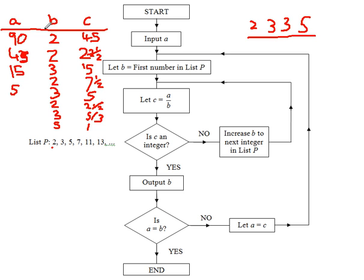Now what the examiner will be looking for is every number in this table. There's a little bit of confusion as to why we go back to the first number in list P, but if you're understanding what it does, there's probably no need to do that. Anyway, the output list is 2, 3, 3, 5.